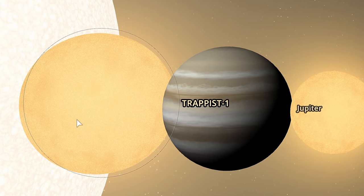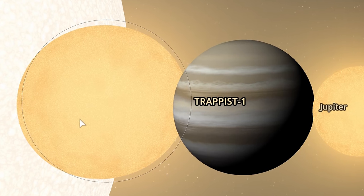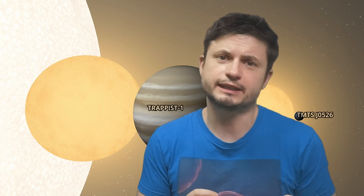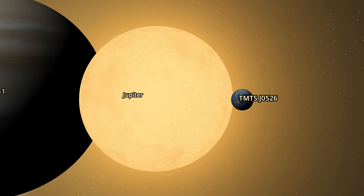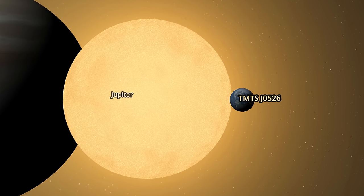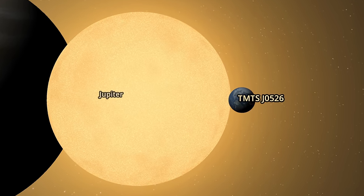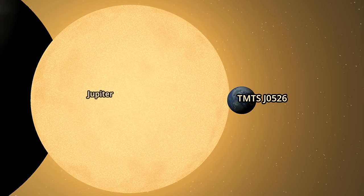This right here is TRAPPIST-1, one of the smallest red dwarfs known to us. As you can see it's just a little bit larger than Jupiter in terms of size, but obviously much more massive. It's about 93 masses of Jupiter. But then this newly discovered star, TMTS-J0526 seems to be smaller than Jupiter. It's approximately 7 times as big as planet Earth, which is right here. And that definitely beats all records, but also beats our previous assumptions about how small stars can get.